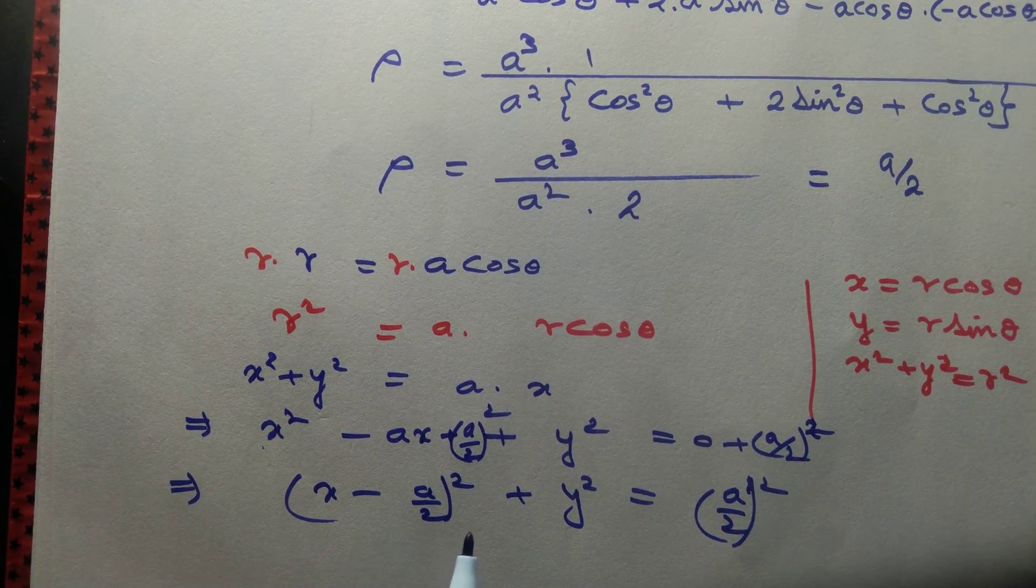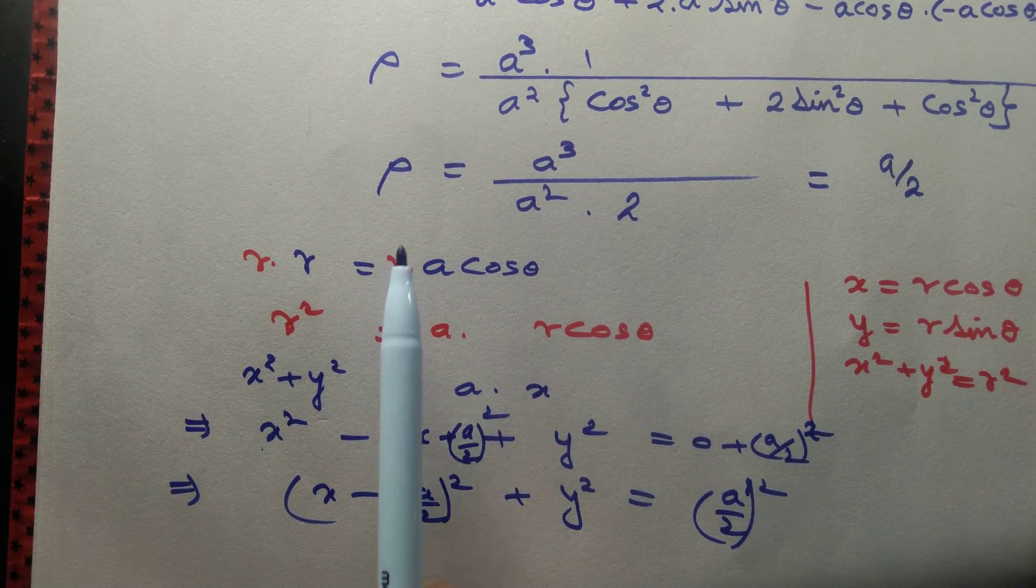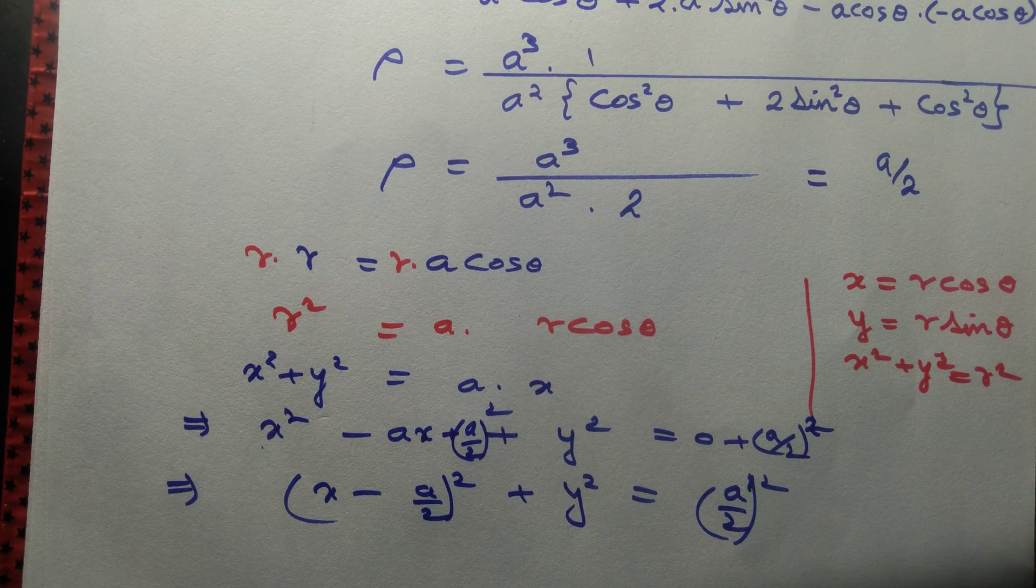Yes, this is equation of a circle with center (a/2, 0) and radius equal to a/2. Yes, radius of curvature is same as radius of the circle in this case.